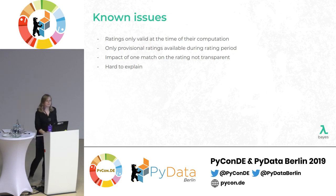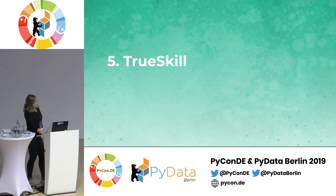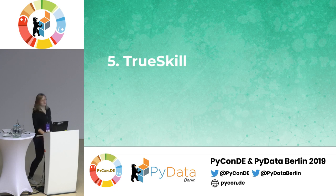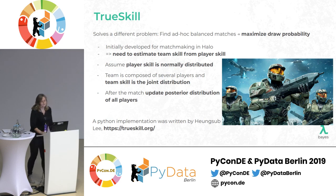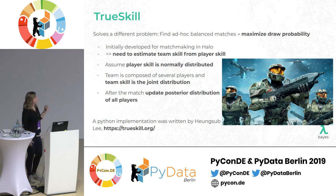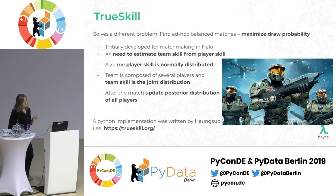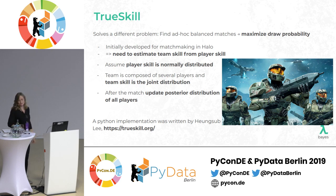TrueSkill is the third algorithm. Honestly, in my opinion the talk should have ended with Glicko, because those two ratings give pretty good returns. But TrueSkill is the buzzword when it comes to ratings — you'll find it everywhere online, so I didn't want to leave it out.